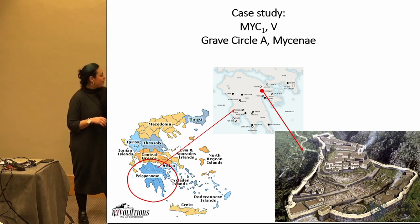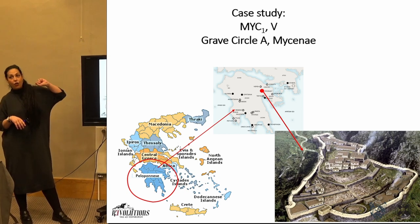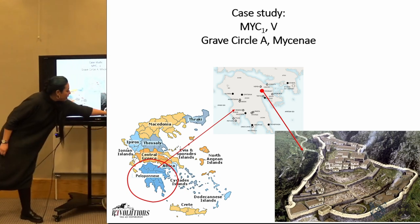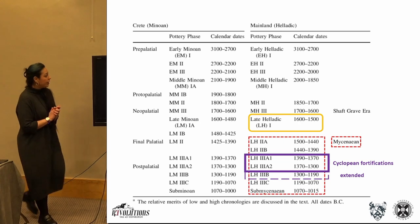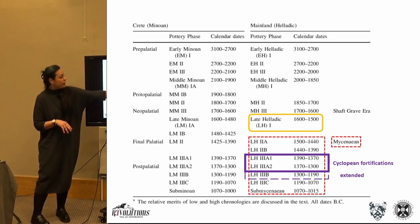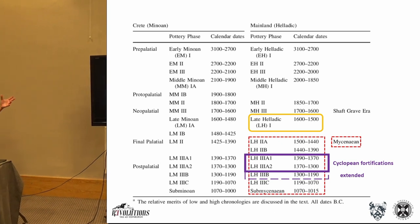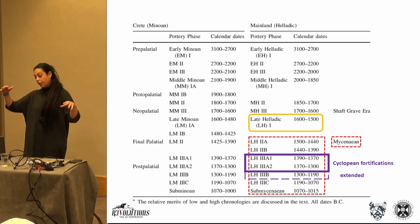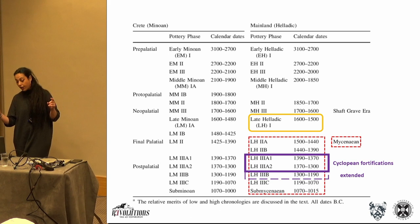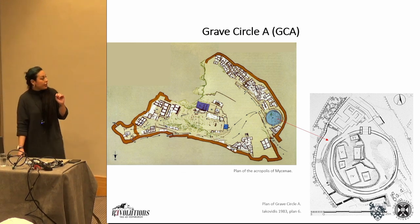This is Grave Circle A. This is Greece, that's the Peloponnese, Mycenae over there, and this is the Mycenaean phase of the citadel. Grave Circle A is a cemetery right there. It wasn't fortified when it was constructed — the shaft grave period is Late Helladic and the fortifications came later — so there is a big chronological difference. The actual graves are not Mycenaean; they are from the transitional period to the Mycenaean era, and were later included within the whole citadel.